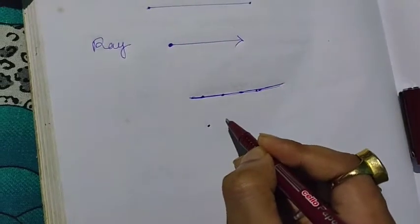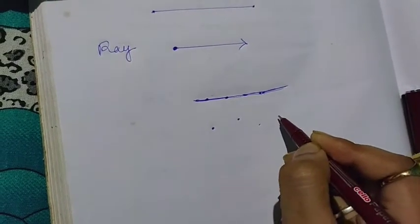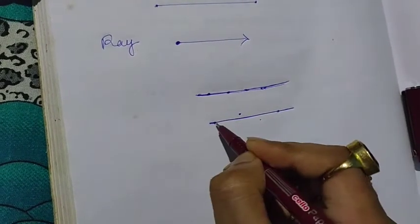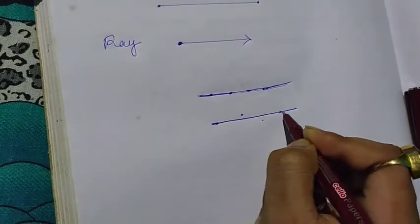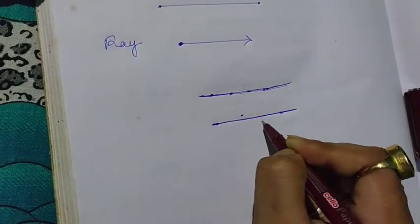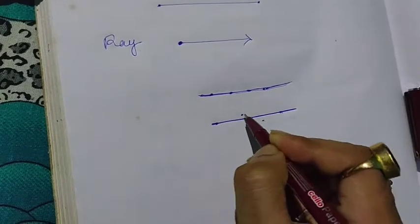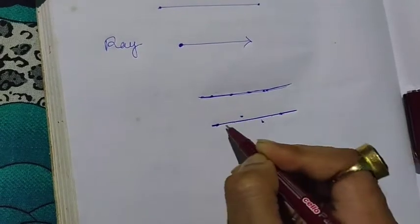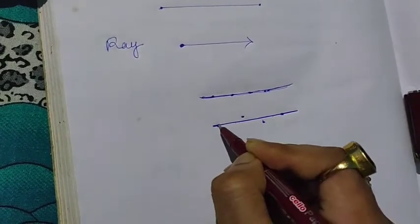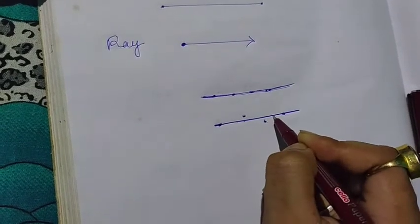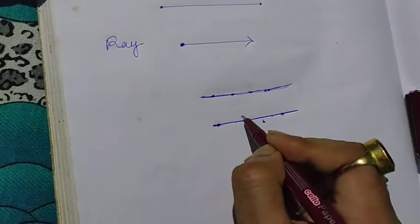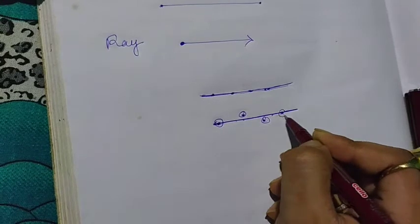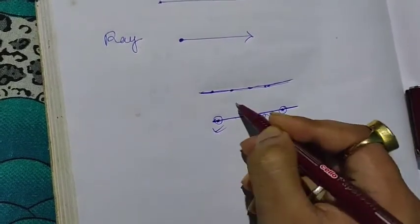Now let us assume we have four points. If we draw a line, only two points are on the line, and these two points are not on the line. So there are four points here, and these four points are not collinear because the points are not all on the same line. These two are on the same line but these two are not, so these four points will be called non-collinear points.